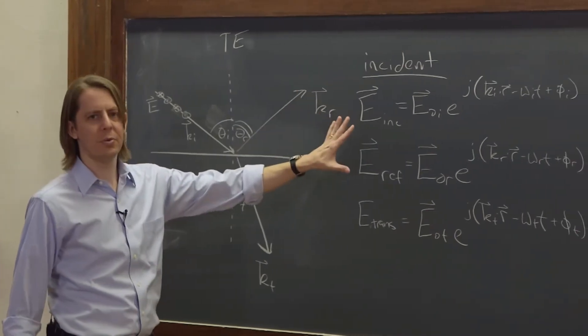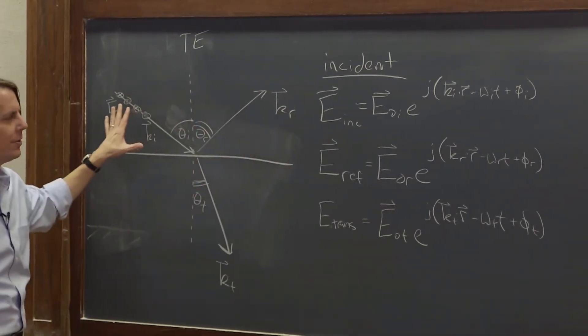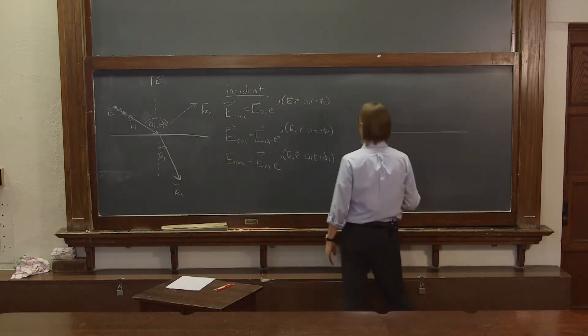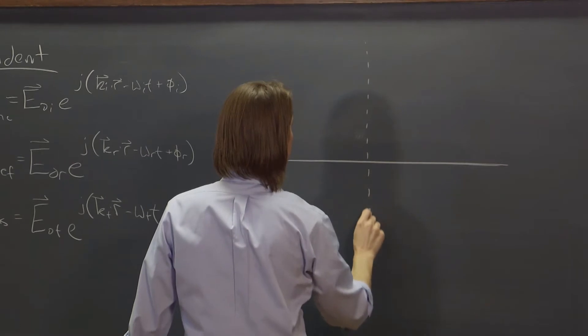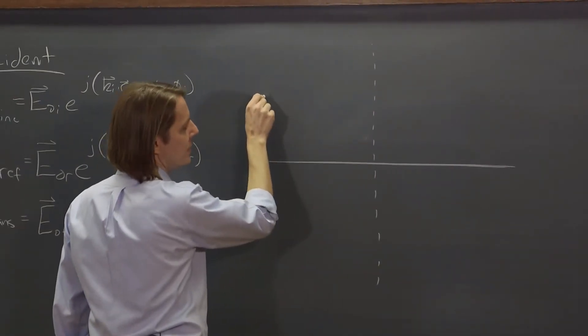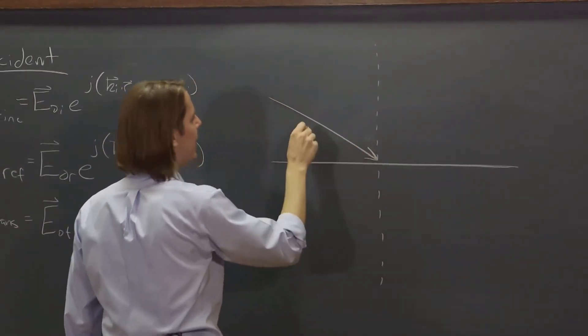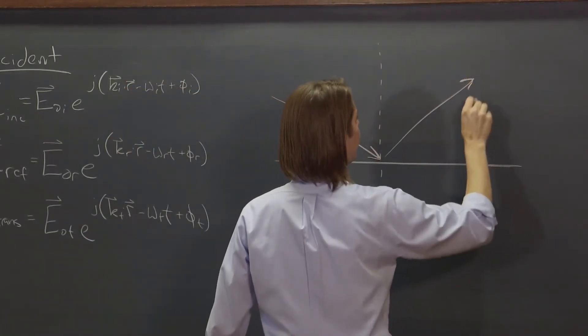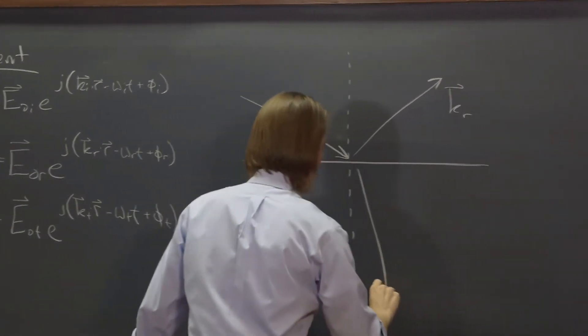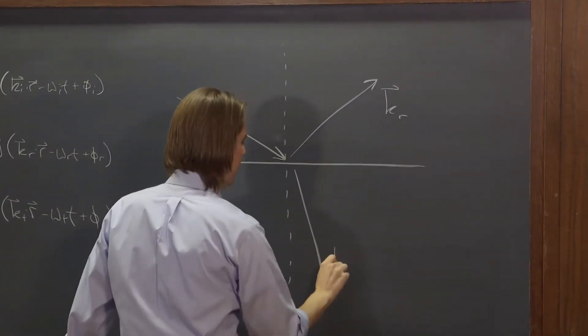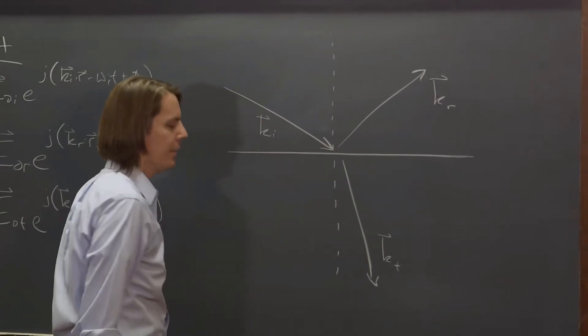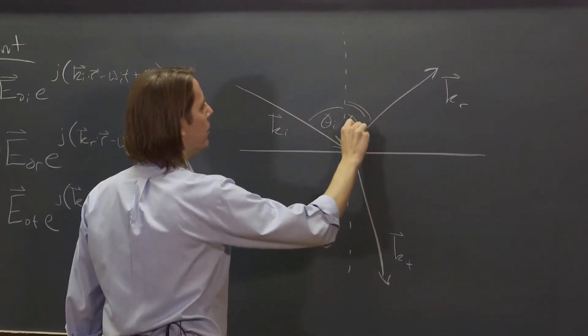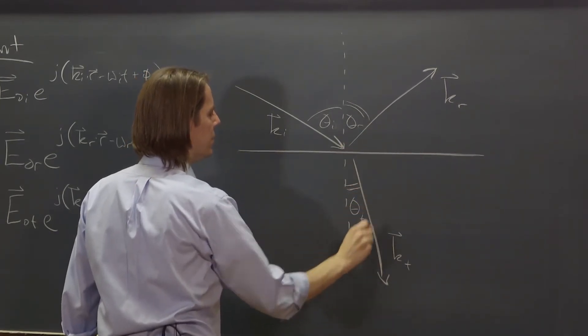And we didn't really distinguish TE from TM here. So this is a drawing for TE. I can do the drawing for TM. Looks something like this. Here's the normal. So the K vector still comes in like that. It's still Ki. And it's still going to maybe reflect like that, Kr. And it's still going to transmit like that, Kt. And the angles are the same, theta-I, theta-R, theta-T.